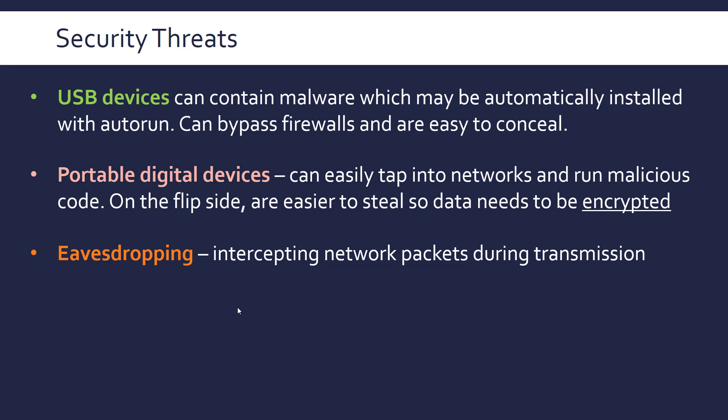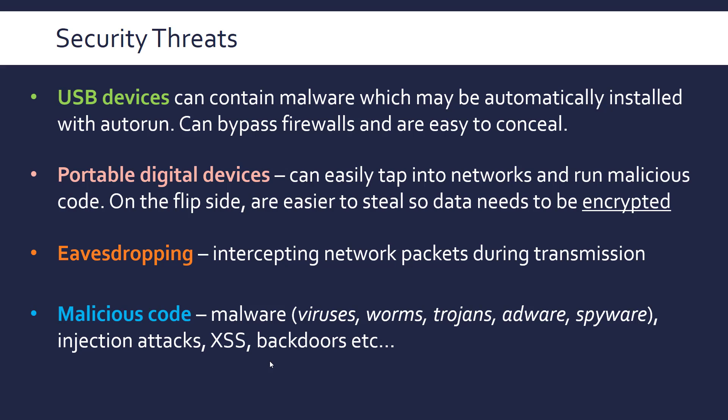Eavesdropping is the digital equivalent of wiretapping — intercepting network packets during transmission. It's very easy to do over Wi-Fi, since anyone can view unencrypted packets. It can also be done on ethernet connections using hubs. You can't always stop packets being intercepted, but you can encrypt the data so that intercepted packets can't be understood.